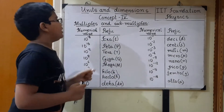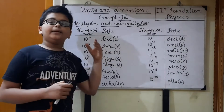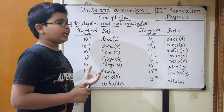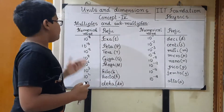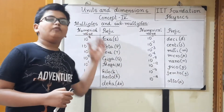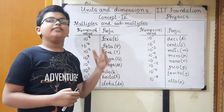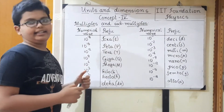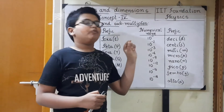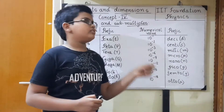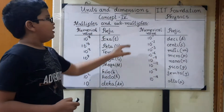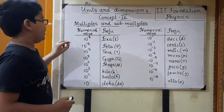What is the use of multiples and sub-multiples? For example, if we want 1000 meters, we cannot write 1000 meters — so we use 1 kilometer. Like that, if we want 1 lakh meters, 1 crore meters, we cannot express it like that, so we use multiples. If we want smaller than 1, like 0.00001, we use sub-multiples — these can be expressed in very small units.